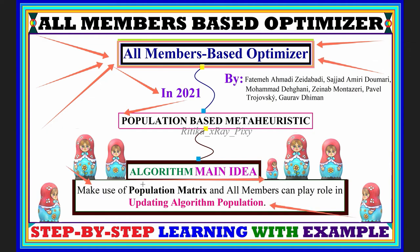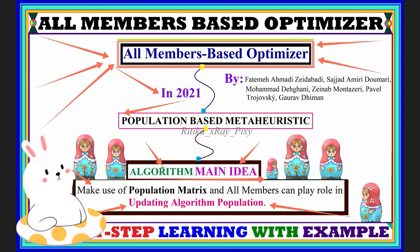The algorithm's main idea is to make use of the population matrix, where all members can play their role in updating the population matrix. This algorithm is a little bit different from other metaheuristics we have already discussed. We will try to understand the algorithm's main idea — the inspiration behind it — so that we can easily understand how it is working.